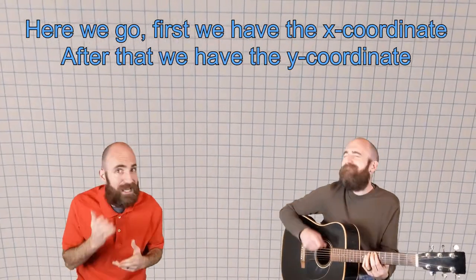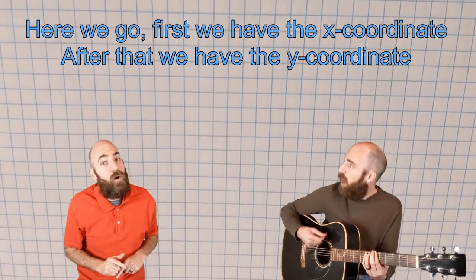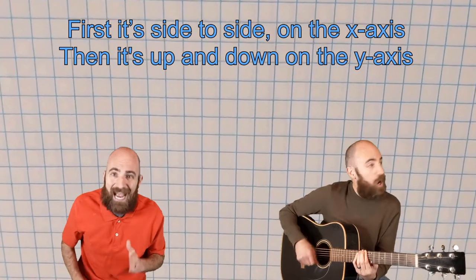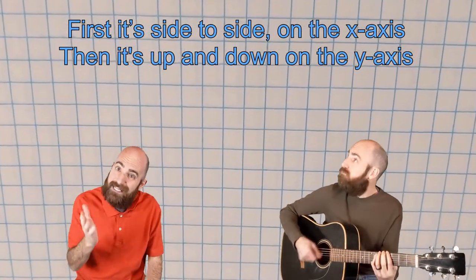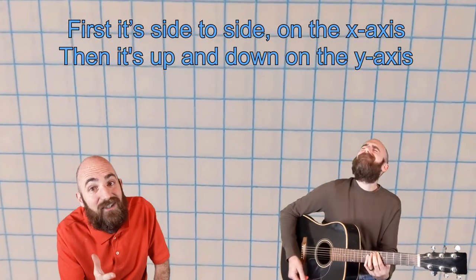Here we go. First we have the X coordinate. After that we have the Y coordinate. First it's side to side on the X axis. Then it's up and down on the Y axis.